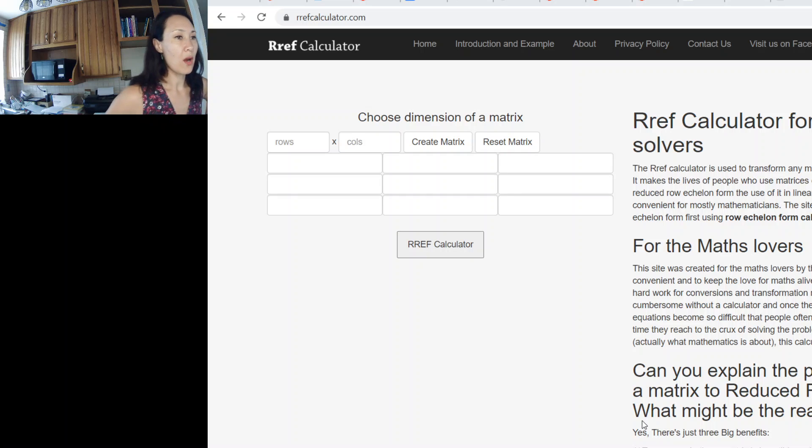If you go to rrefcalculator.com, we can actually put in how many rows and columns we have. So we have three rows, we have four columns, and we want to enter in our coefficients. So we have 5, and negative 2, and negative 3, and then our kind of answer vector. The first field is 24.